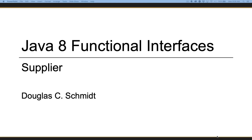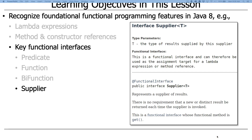That was bifunction. Let's now talk about supplier. We talked about predicate, which was the simplest of the interfaces — it took a type T and returned a Boolean. We then talked about function, which was a generalization of predicate that mapped some type T to a return value of type R. We then talked about bifunction, which is basically a function that has a second parameter.